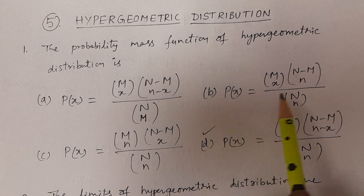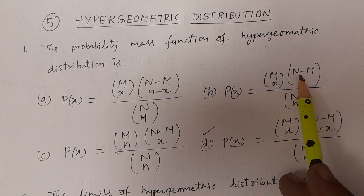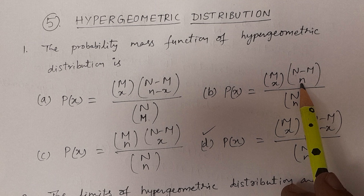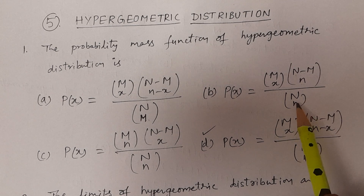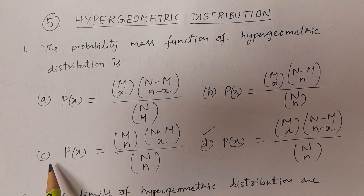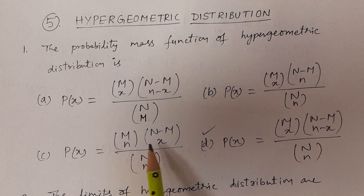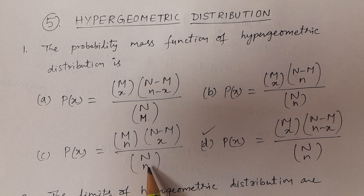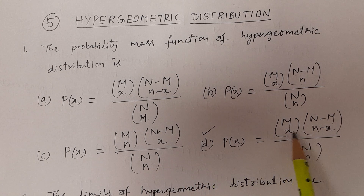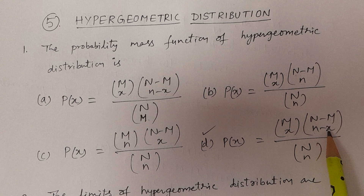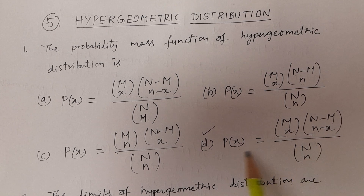Option B: P(X) = MCX · (N minus M)CN divided by NCN. Option C: P(X) = MCN · (N minus M)CX divided by NCN. Option D: P(X) = MCX · (N minus M)C(N minus X) divided by NCN. This is the correct answer.